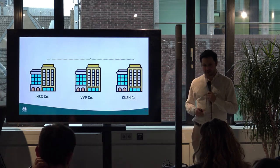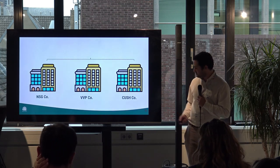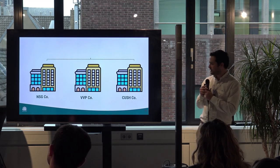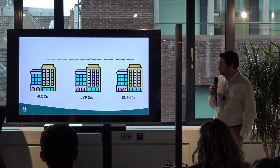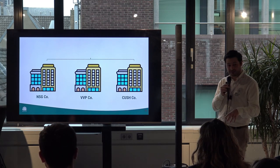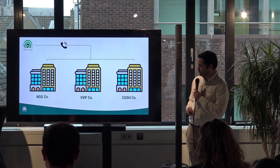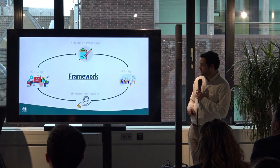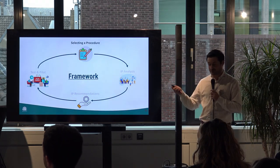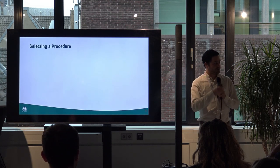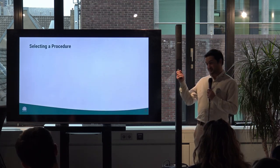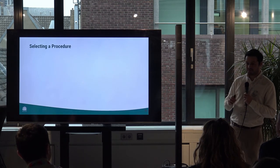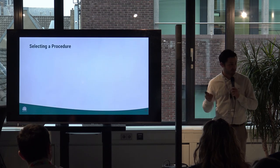To explain the second part of the framework, let me give you an example. We have three organizations: NSG Company, BBP Company, and Cush Company. They've heard about this concept called Intelligent Procedures and that Resilient is working on a framework to implement it, so they decide to give us a call. This is where our step-by-step part of the framework kicks in, and the first step is selecting a procedure. Having already piloted this, we realized this was something we had overlooked at the start, because scoping, in many ways, determines the success of applying any framework.